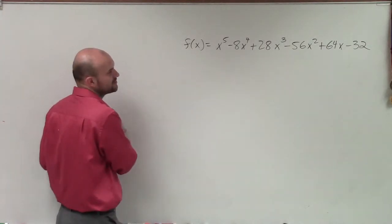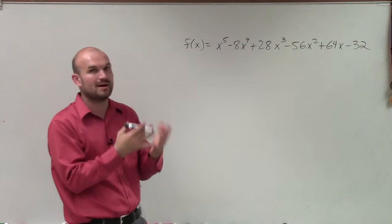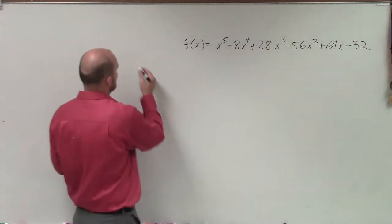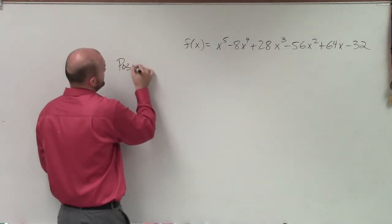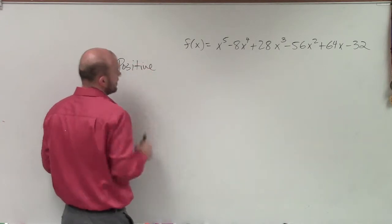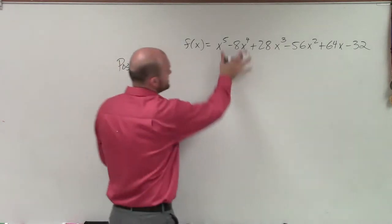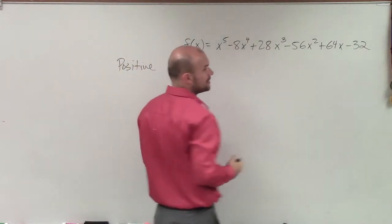So by using Descartes' rule of signs, what we want to do is determine the number of positive and negative real zeros. So the number of positive real zeros, what we're going to do is we're going to bring down the signs of each one of our monomials that make our polynomial.